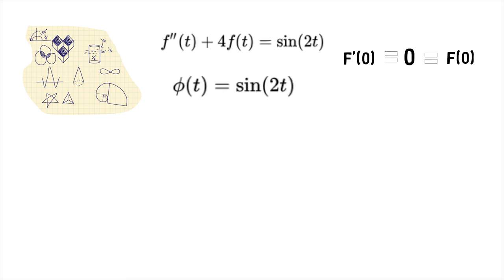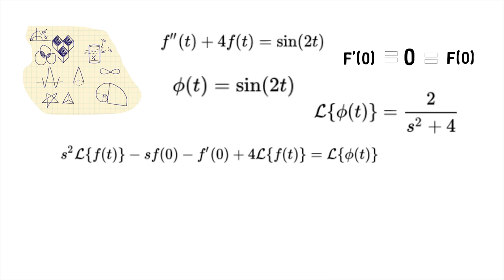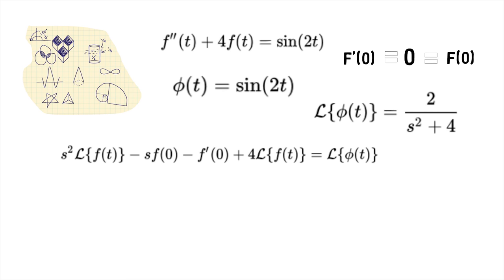We know that if psi of t equals sin of 2t, then Laplace transform of psi of t equals 2 upon s squared plus 4. Applying Laplace transform to both sides of the equation, we get the following equation.